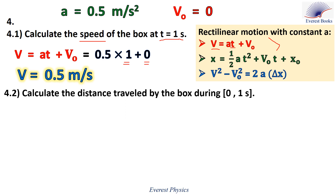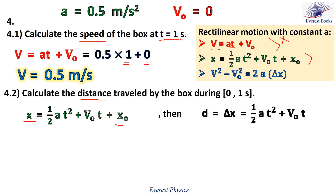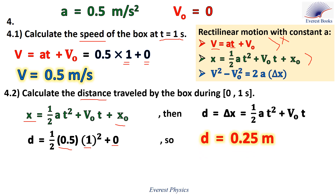Part 4.2: calculate the distance traveled by the box during the time interval 0 to 1 second. To calculate distance, we cannot use the first equation; we use the second or third equation. Using the second equation: X minus X zero equals the distance traveled by the box, giving D equals one-half A T squared plus V_zero T. The acceleration is 0.5 meters per second squared, the time is one second, and the initial speed is zero. Therefore, the distance is 0.25 meters.